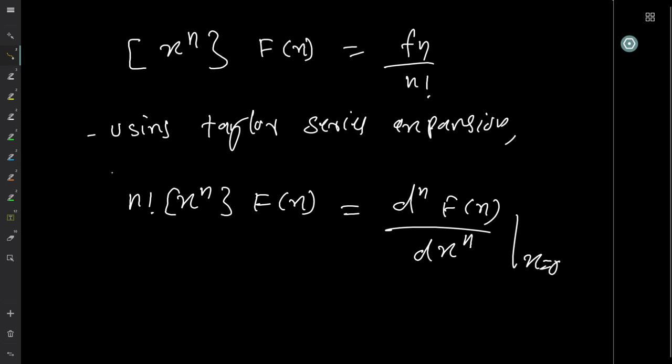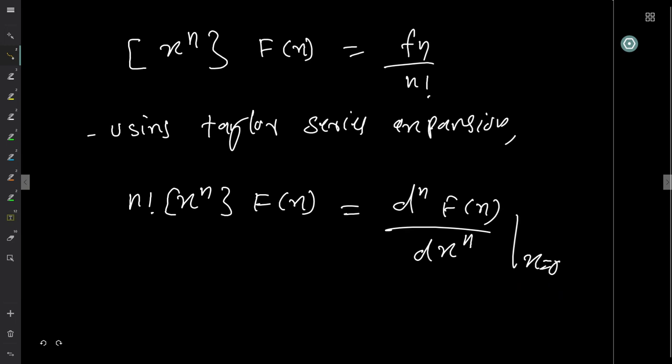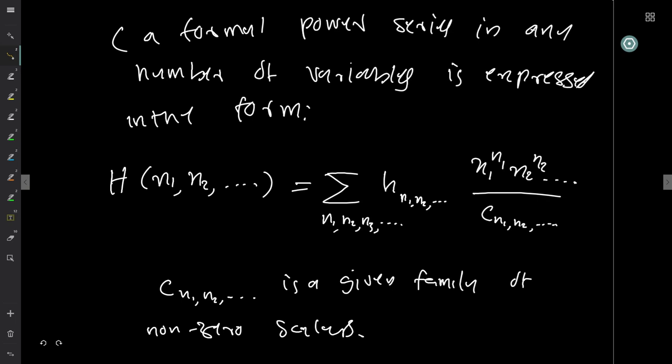To form generating series, we multiply by x^n and normalize by n!. We define F(x) = Σ_{n≥0} f_n · x^n / n!. This is called the exponential generating function of the species F. To recover f_n, find the coefficient of x^n/n! in F(x), which by Taylor/Maclaurin series is d^n F(x)/dx^n evaluated at x = 0.